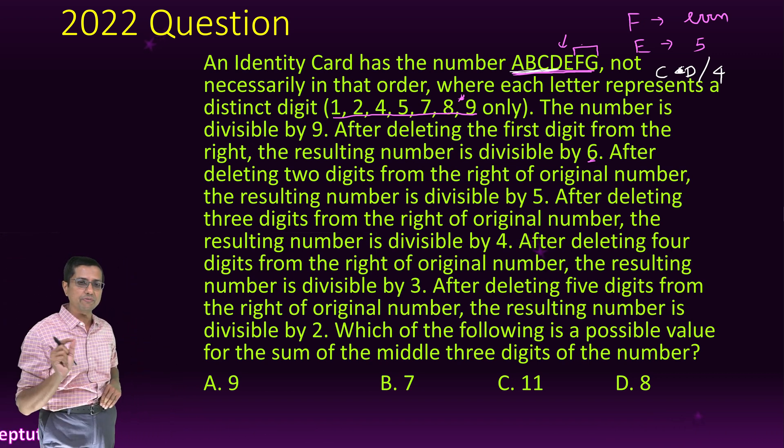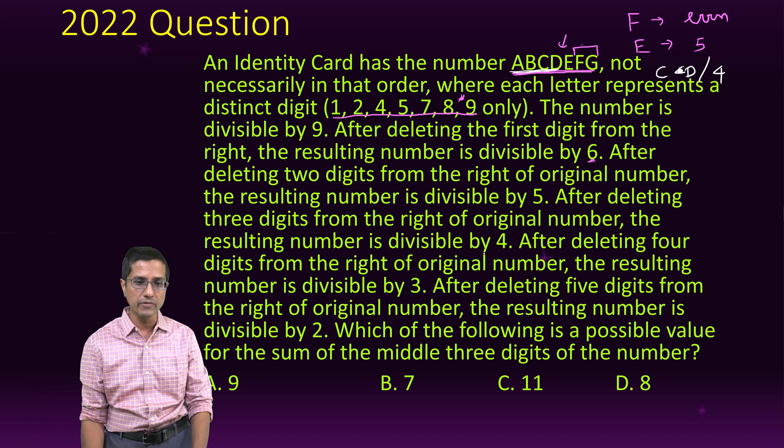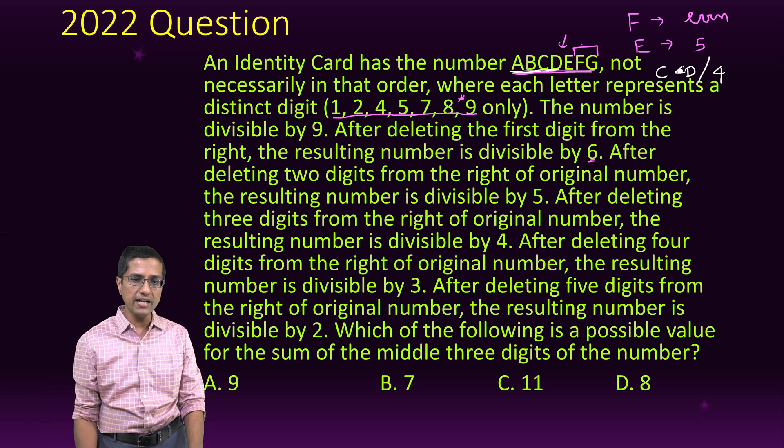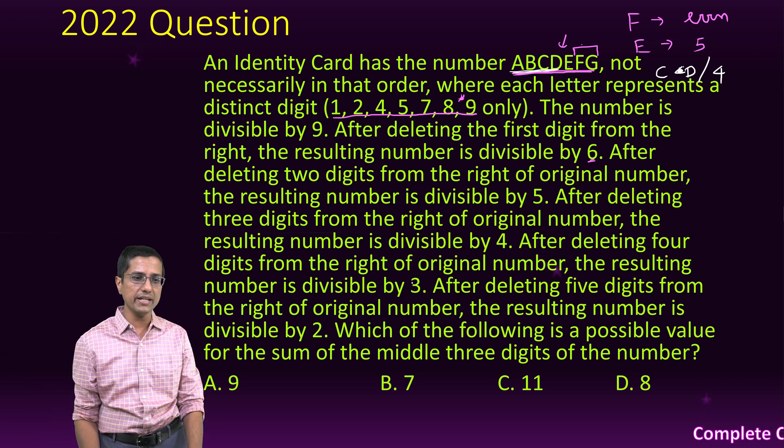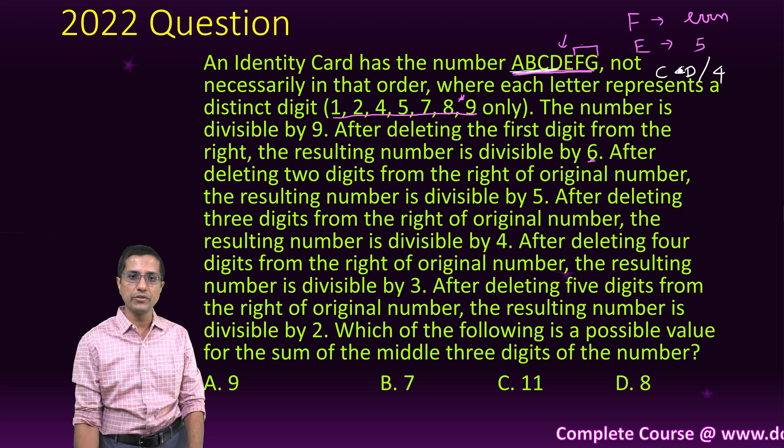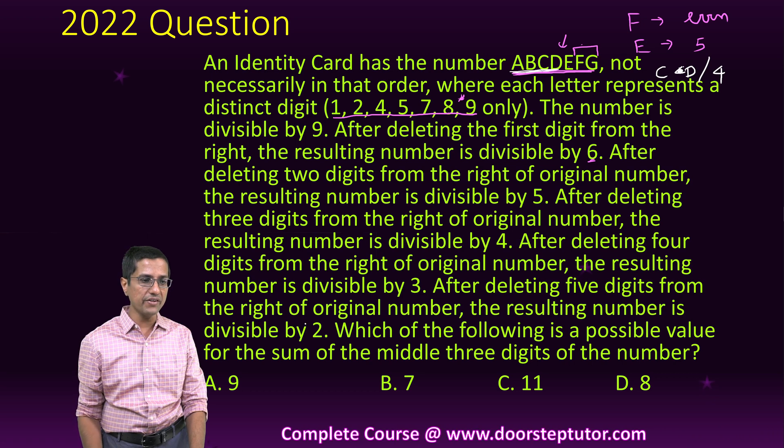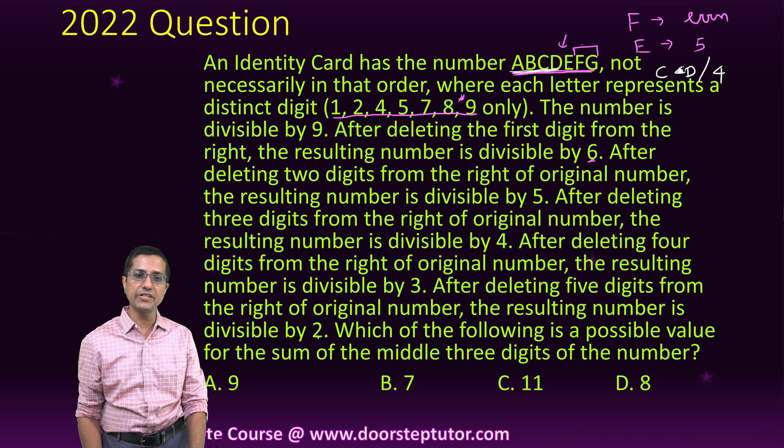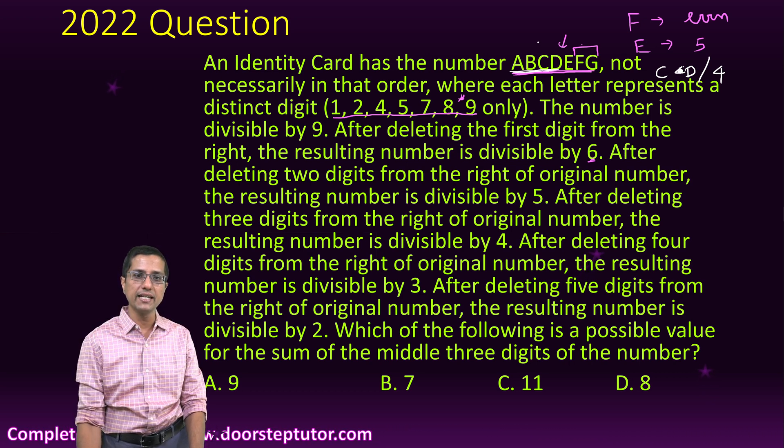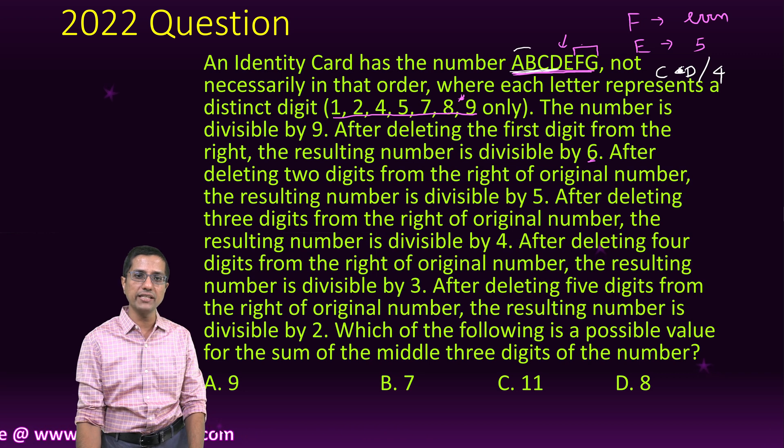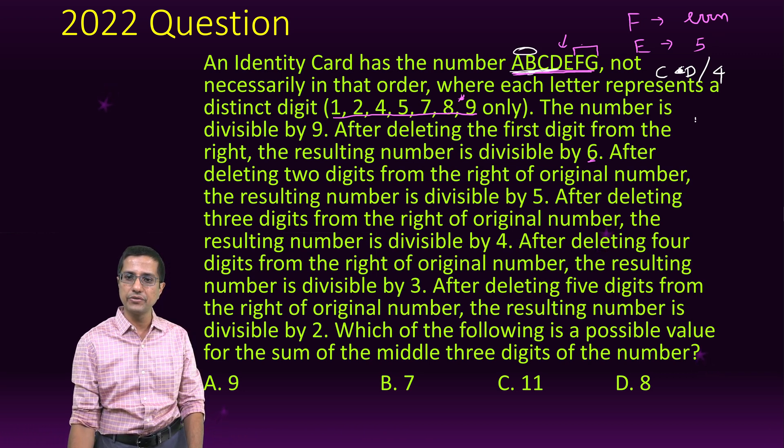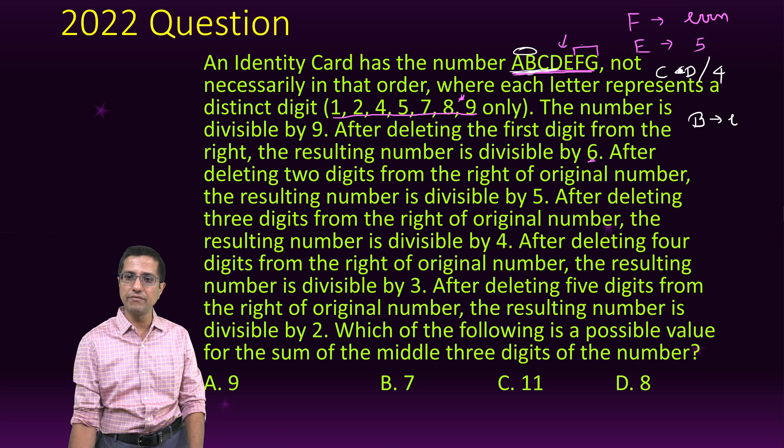If I delete four digits, the resulting number is divisible by 3. So ABC is divisible by 3. After deleting five digits, the resulting number is divisible by 2, which means that if I look at this number AB, the B has to be even. So B has to be even.